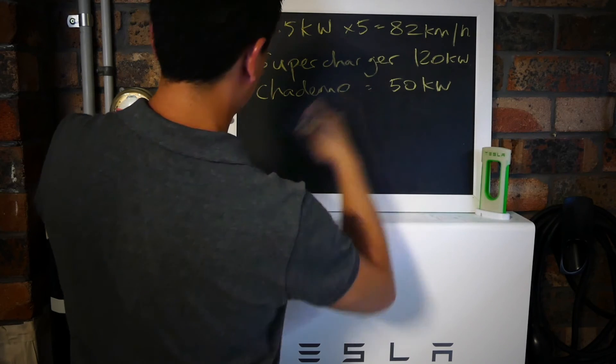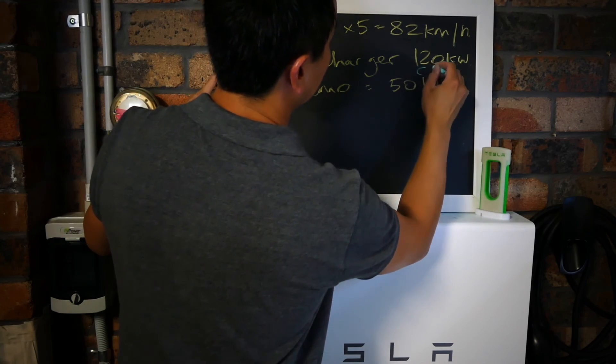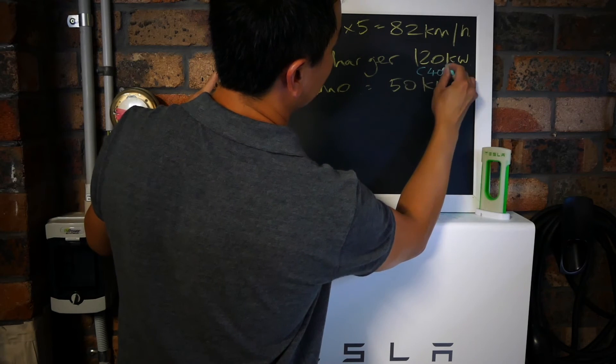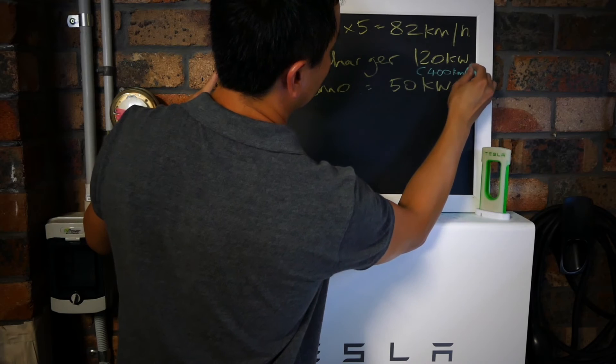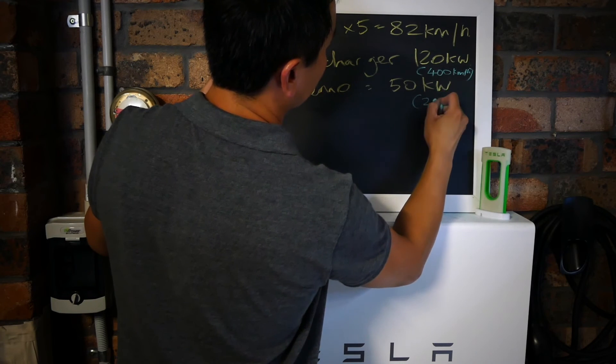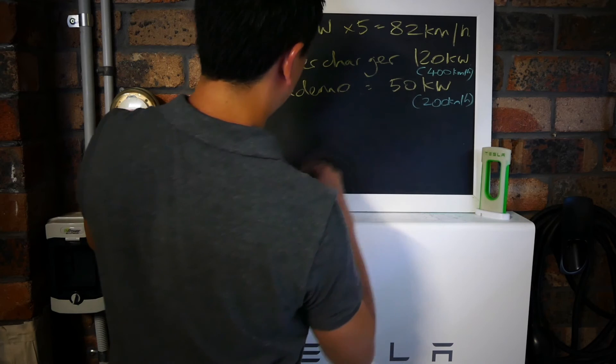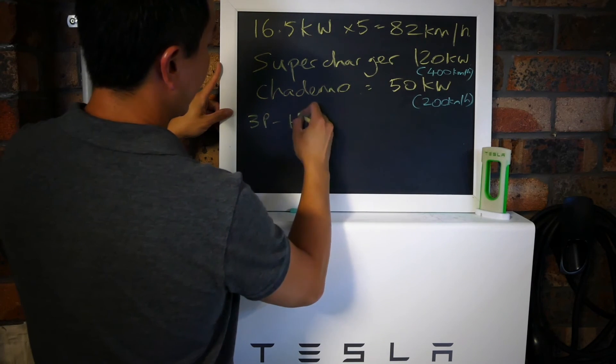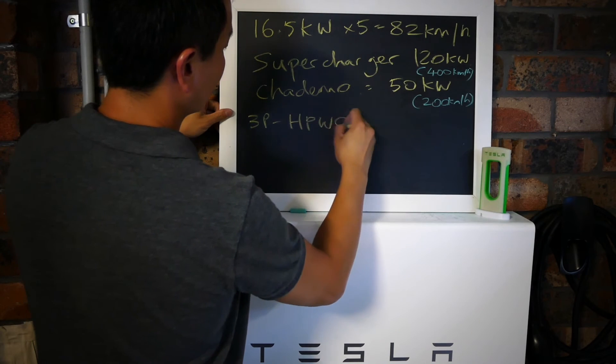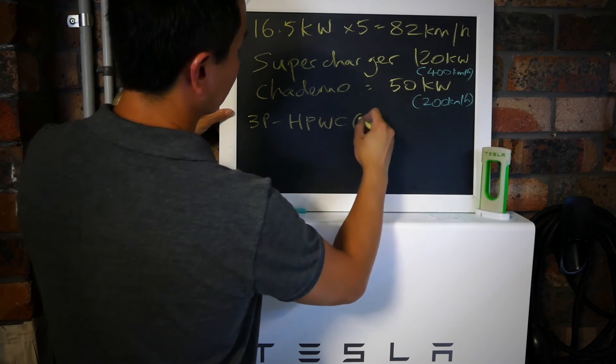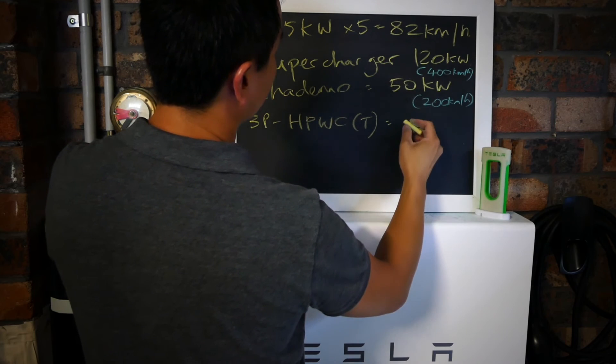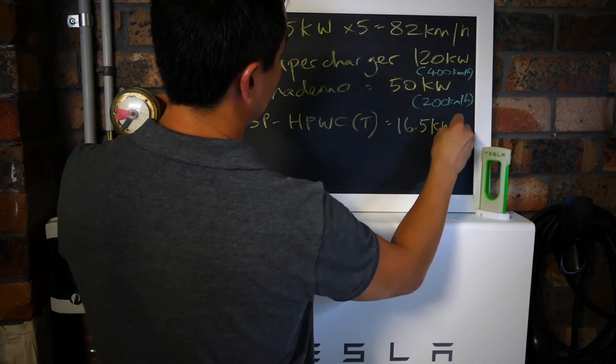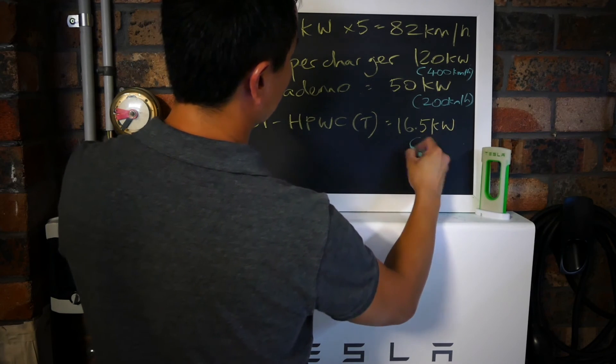Put how fast it is in brackets: the Supercharger potentially is 600 but more likely 400 if you're lucky. CHAdeMO potentially could be 200 kilometers an hour. The next fastest would be a three-phase high-powered wall charger, which is the Tesla one. That will get you your car's max charging rate at 16.5 kilowatts, which is 82 kilometers an hour.